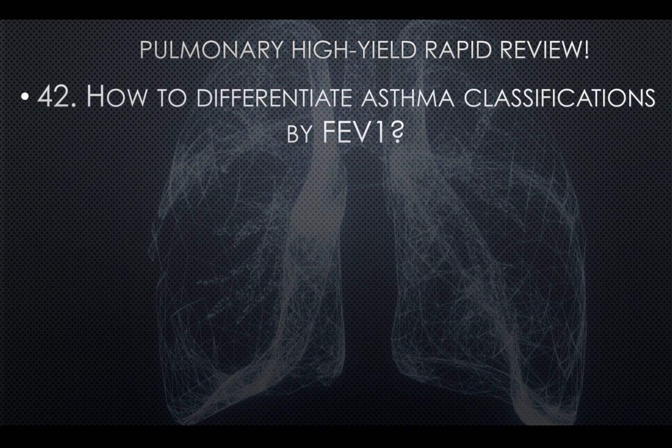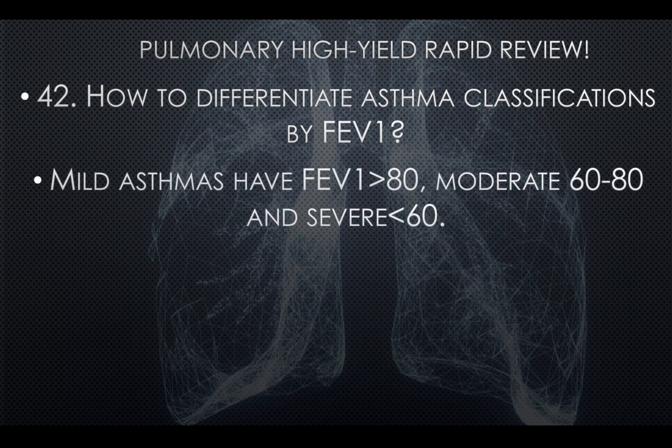Question forty-two: How to differentiate asthma classification by FEV1. They'll give you different FEV1 numbers and ask for the classification. Mild asthma: FEV1 greater than 80%. Moderate: 60 to 80%. Severe: less than 60%. FEV1 of 50 is severe, FEV1 of 70 is moderate.